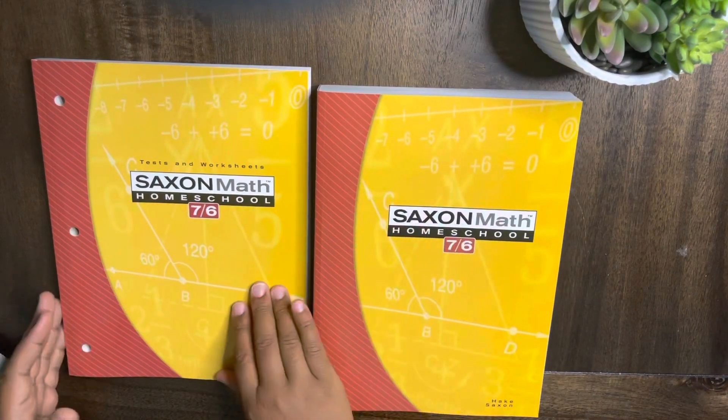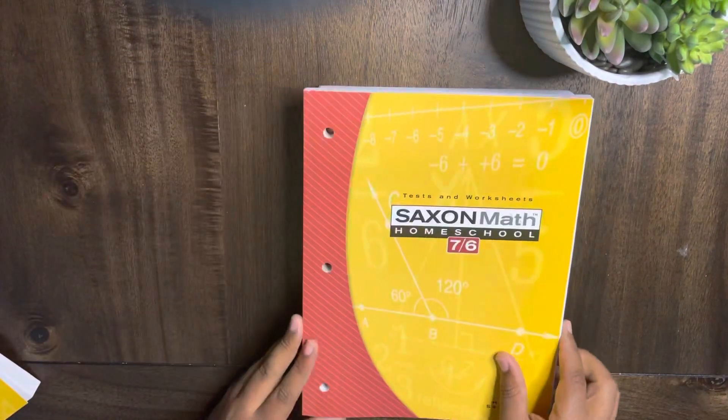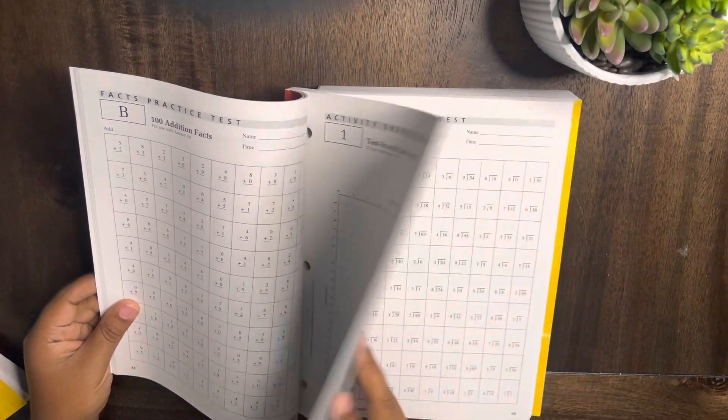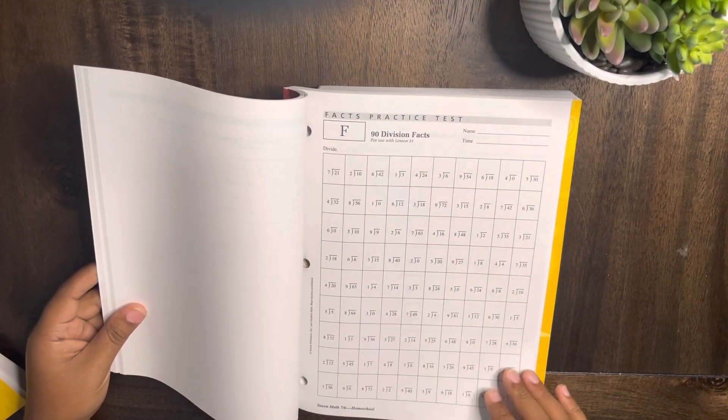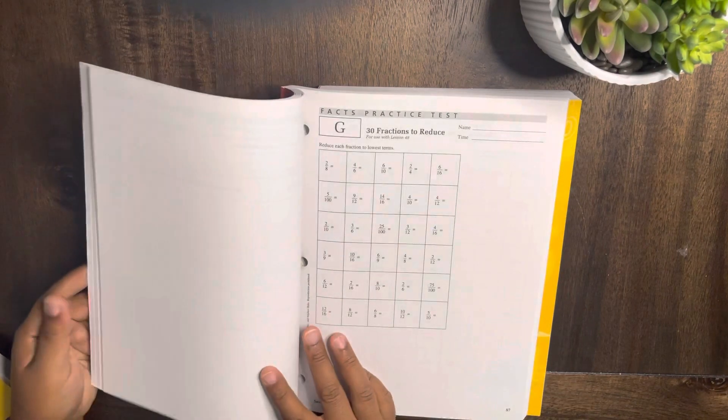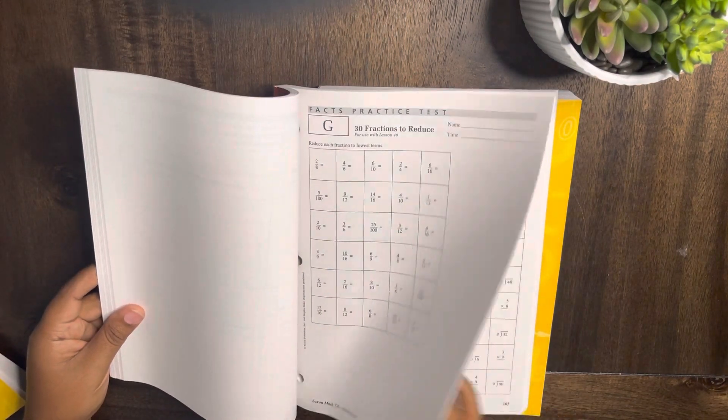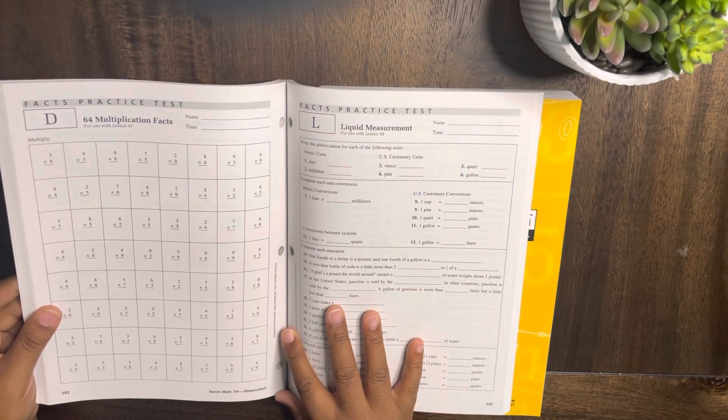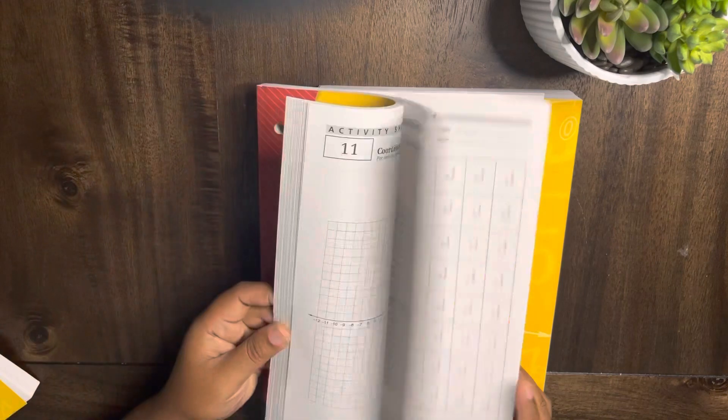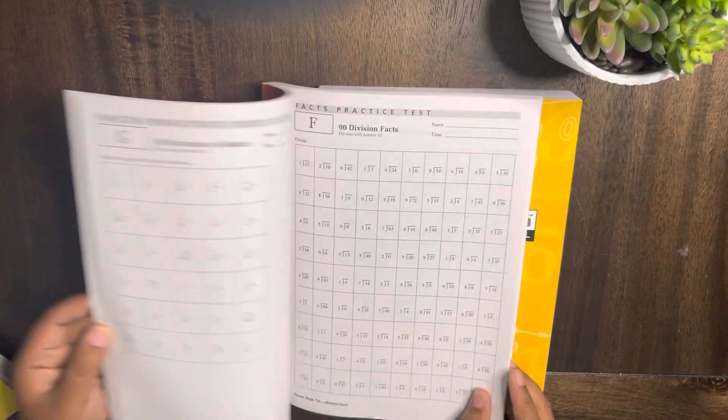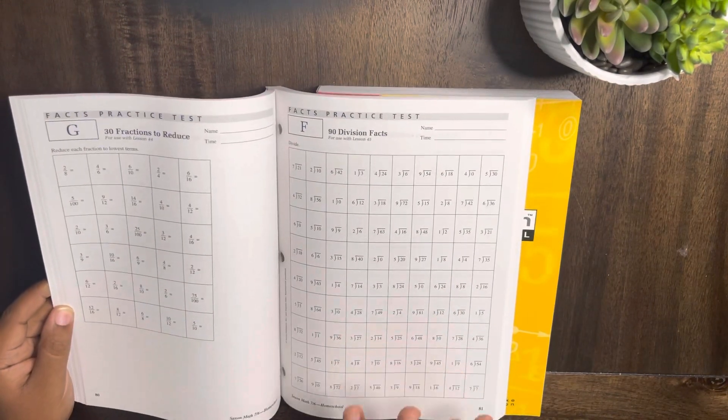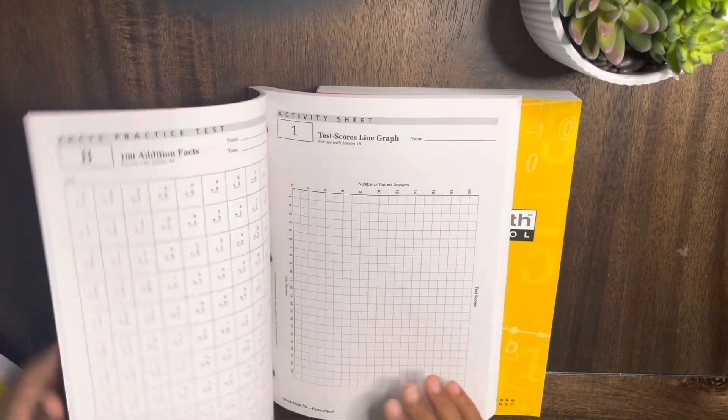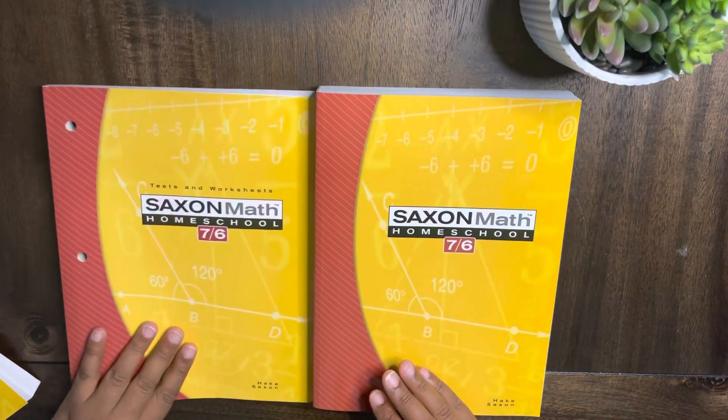I definitely picked out Saxon because I did want to give my children a bigger push this year. This is the test and worksheets. I'll just flip through a couple of these pages. Saxon is very much about practice, practice, practice, which I like, which is why I went with them. I wanted my kids to have more practice with math.